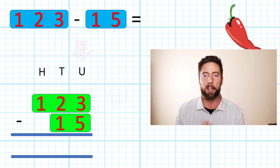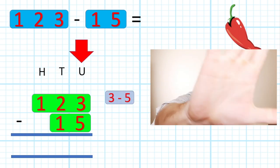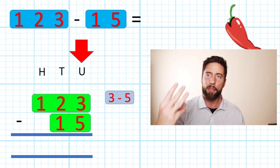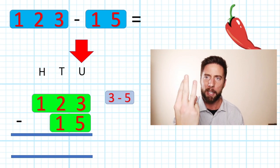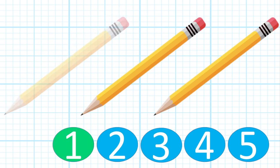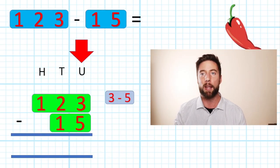I'm going to start at my smallest value, the units value. Three subtract five—boom, stop there! What does that mean? I've got 3, how am I possibly going to take away 5? Imagine you have 3 pencils in your hand—you can't take away 5. So what are you going to do? We need a method, we need a strategy.